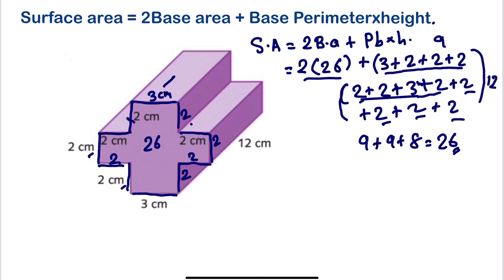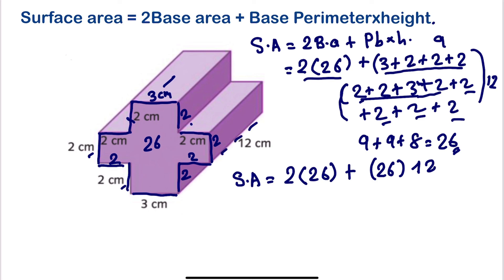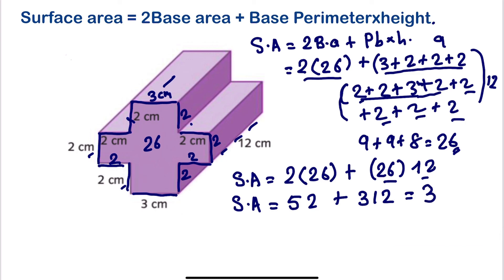Now we know the perimeter as well. Surface area equals two times the base area — two times 26 — plus the perimeter of the base, which is also 26, times the height of 12. So surface area equals 52, plus 26 times 12 which gives 312. Summing them: 52 plus 312 equals 364 cm². So that's it, thanks for watching, please subscribe.